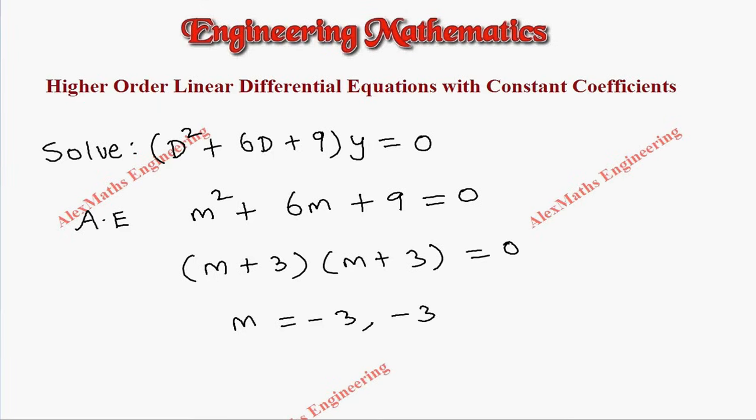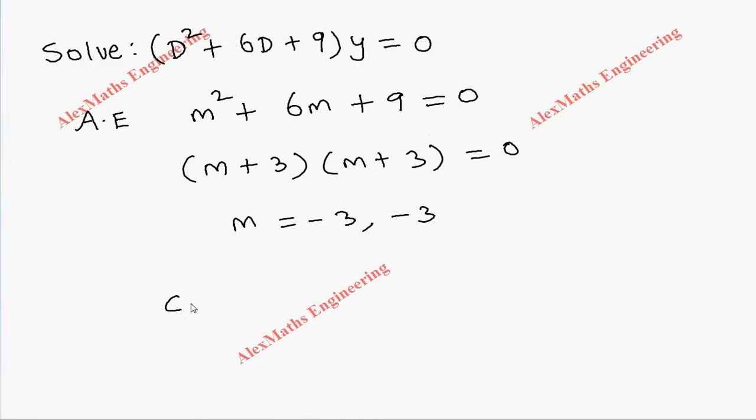As per the rule, the complementary function is CF = (c1 + c2x)e^(-3x). Now there is no particular integral because the other side of the equation is 0.